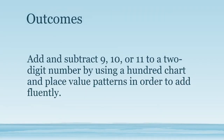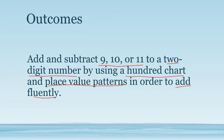Here are our outcomes for today. We are going to add and subtract 9, 10, or 11 to a 2-digit number by using a 100 chart and place value patterns in order to add fluently. That means we don't want to be counting by ones anymore because that takes a long time. We want to use more efficient strategies so that we can add and subtract quickly and easily. We've been working a lot in first grade with adding multiples of 10 or subtracting multiples of 10. We know that 9 is 1 less than 10 and 11 is 1 more than 10, so we're going to use what we know about adding and subtracting those multiples of 10 to help us add and subtract either 9 or 11.